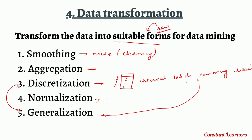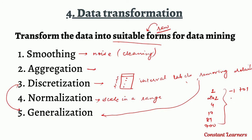Data normalization is done to scale the values of the data within a particular range. For example, in a table the attribute values might range widely — like 1, 202, 4, 19, 81, 700 — which are very random. We can apply normalization techniques and formulas to change the range of these values, either between minus 1 to 1 or between 0 to 1. That is normalization — changing attribute values to appear or scale within a particular range.